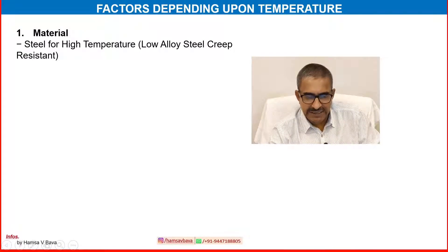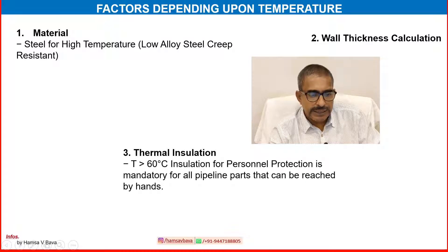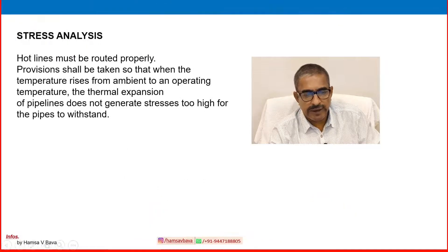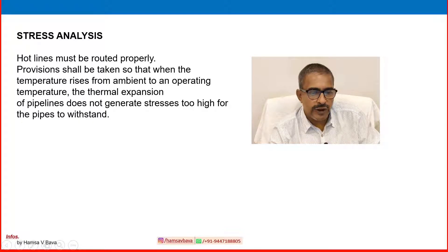Factors depending on temperature in design parameters: material selection includes steel for high temperature and low alloy steel for creep resistance. Wall thickness calculation is also involved. For thermal insulation, when temperature is greater than 60 degrees, insulation for personal protection is mandatory for all pipeline parts that can be reached by hand. The design temperature of the fluid in the piping is generally assumed to be the highest temperature of the fluid in the connected equipment. For stress analysis, hot lines must be routed properly so that thermal expansion from ambient to operating temperature does not generate stresses too high for the pipe to withstand.